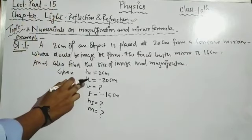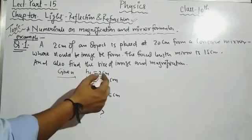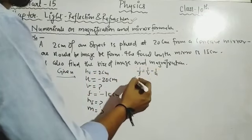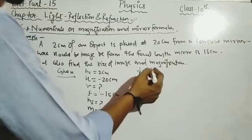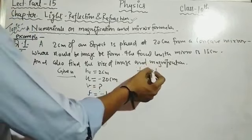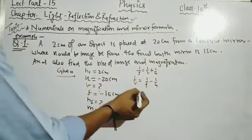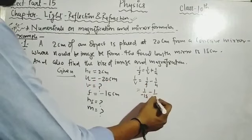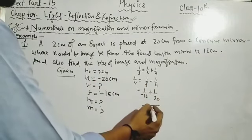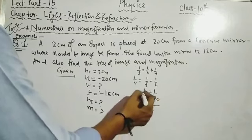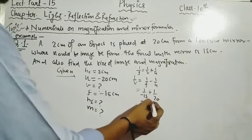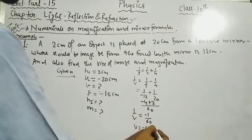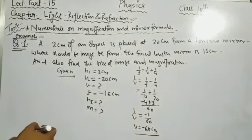To find v, we apply the mirror formula: 1/f = 1/v + 1/u, rearranged as 1/v = 1/f - 1/u. Substituting f = -15 and u = -20: 1/v = 1/(-15) - 1/(-20) = -1/15 + 1/20. Taking LCM of 60: 1/v = -4/60 + 3/60 = -1/60. Therefore v = -60 cm.